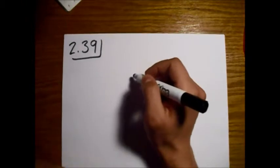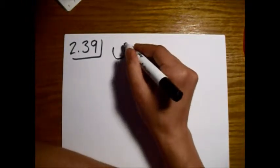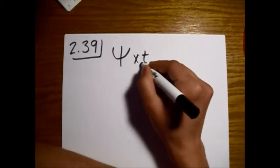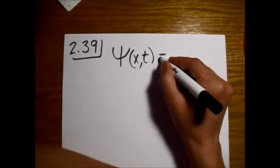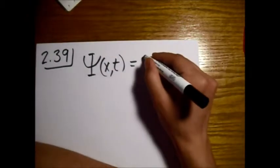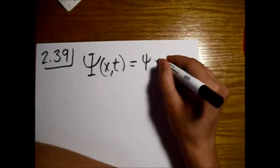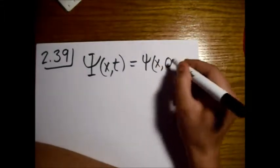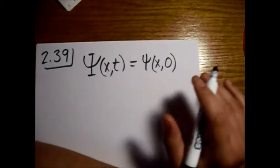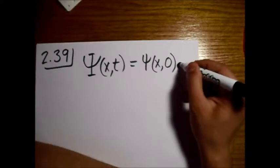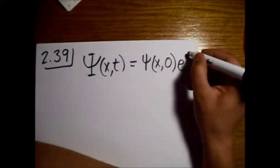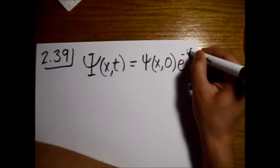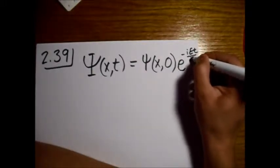So what this boils down to is that when we look at the Schrödinger equation for any of our stationary states, if we want to know how that state evolves in time with dependence on T as well, then you have the initial wave function and the way that it evolves in time is this exponential sort of a phase factor, e to the minus i E t over h bar.